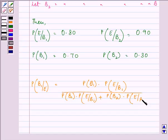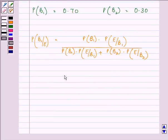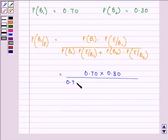Now, what we need to do next is we need to just substitute these values from the given values that will be equal to 0.70 into 0.80 upon 0.70 into 0.80 plus 0.30 into 0.90.